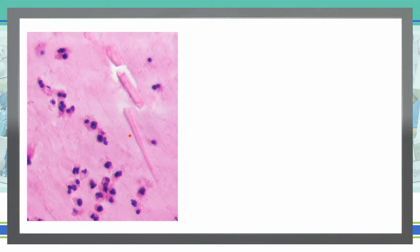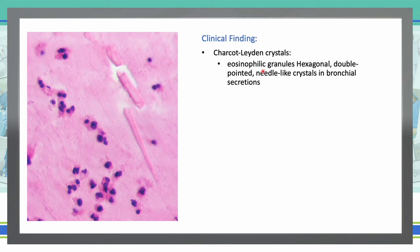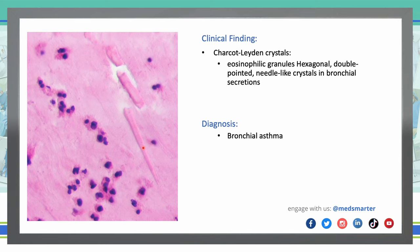Next, Charcot-Leyden crystals. These are microscopic crystals composed of eosinophilic protein, found in people who have allergic diseases such as asthma or parasitic pneumonia. The clinical finding they will describe: eosinophilic granules, hexagonal, double-pointed needle-like crystals in bronchial secretions. So eosinophils in bronchial secretions will have needle-like crystals. Where are we going to see that? Bronchial asthma, or patients who have parasitic pneumonia.